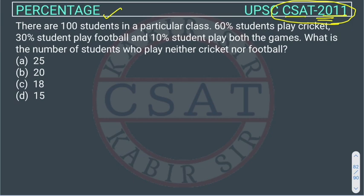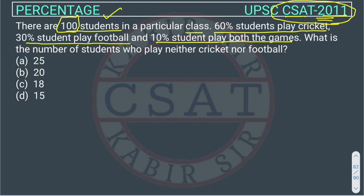The question states: there are 100 students in a particular class. 60% of students play cricket, 30% play football, and 10% play both games. What is the number of students who play neither cricket nor football?